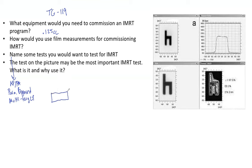One thing I would certainly consider is a band plan: say two gray here, 1.5 gray here, and one gray here along the film length. As the MLCs move, you can see they trail and give more dose in one region, are partially covered in the next, and even more modulated in the third. You can analyze that band very easily and really test how good your MLCs are.